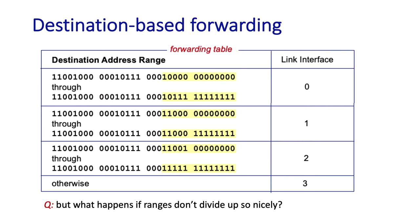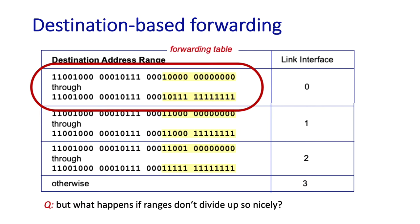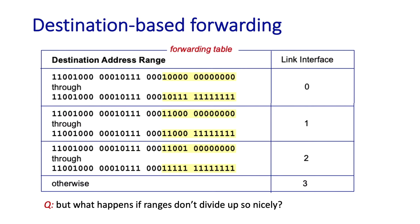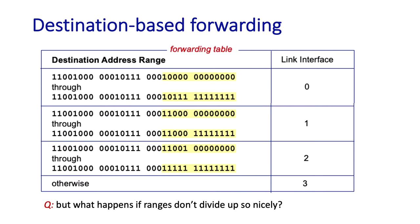What you see here is a simple example of a forwarding table. When we think about forwarding tables, the first thing to consider is that there are 2 to the 32 — almost 4 billion — possible destination addresses, and we certainly don't want a routing table entry for each one. So routing table entries are often aggregated into ranges. Any packet with a destination address in the first range goes to output port 0, the second range goes to interface 1, the third range goes to interface 2, and otherwise the default outgoing interface is interface 3.